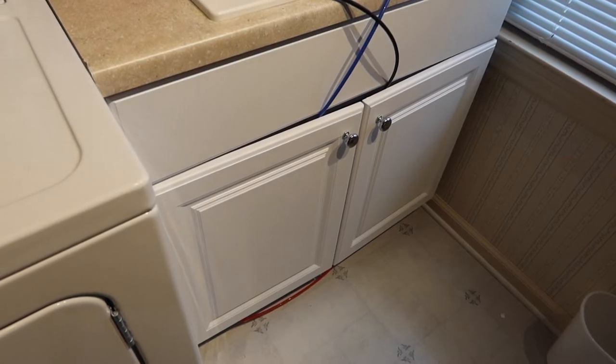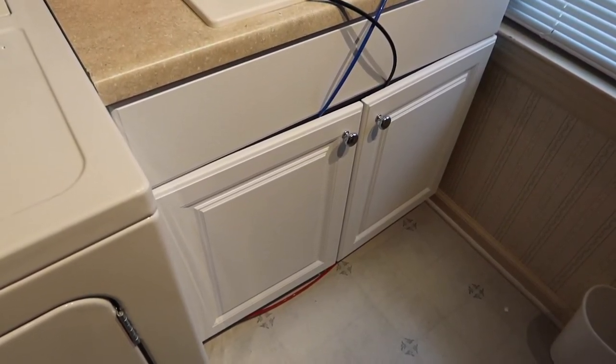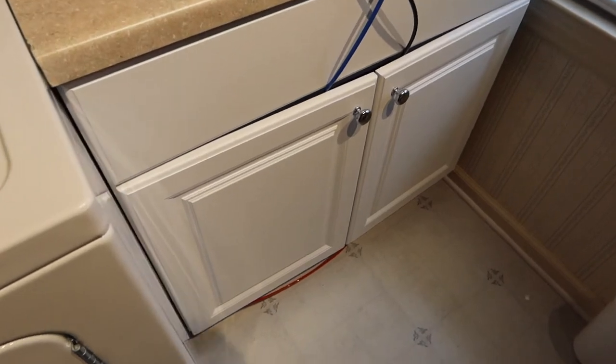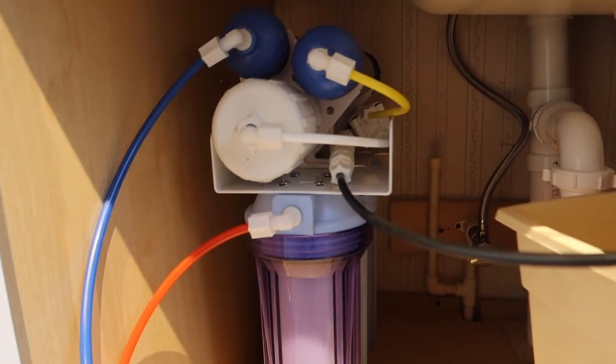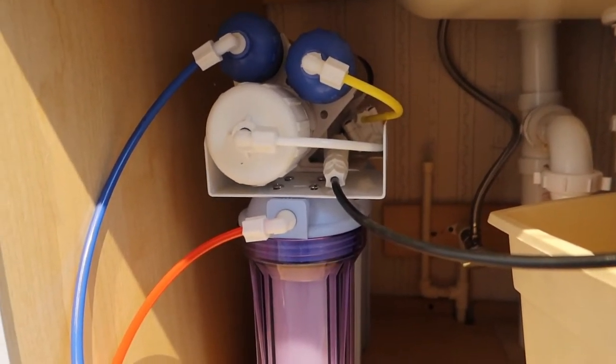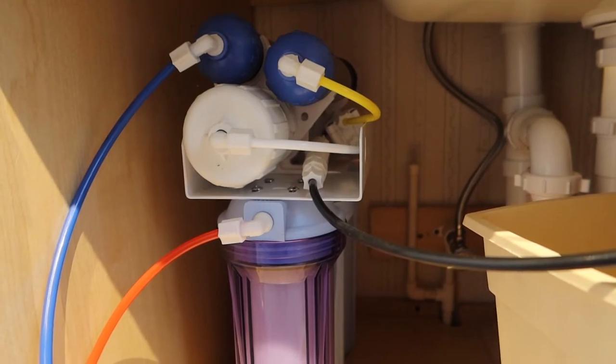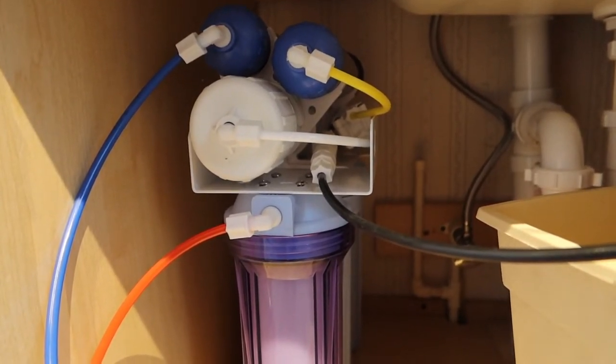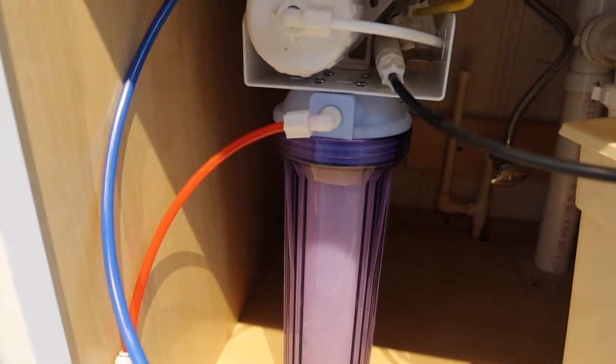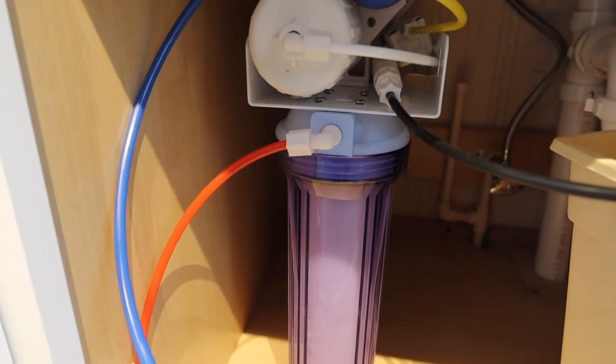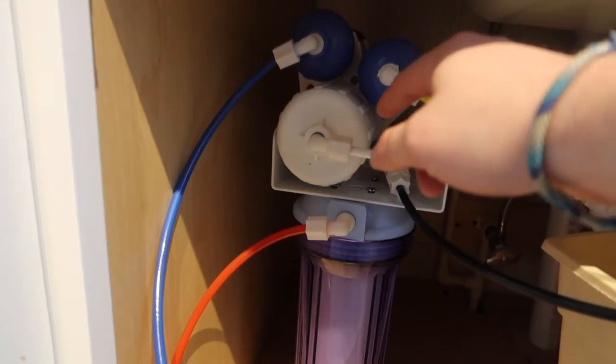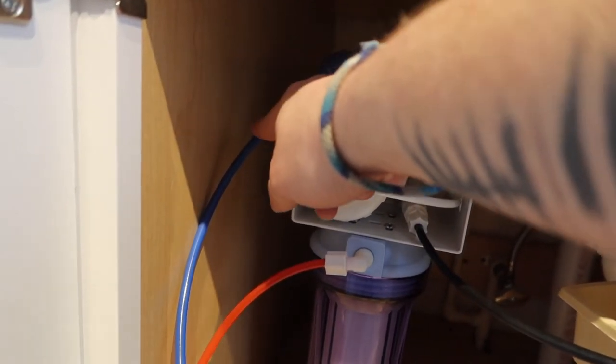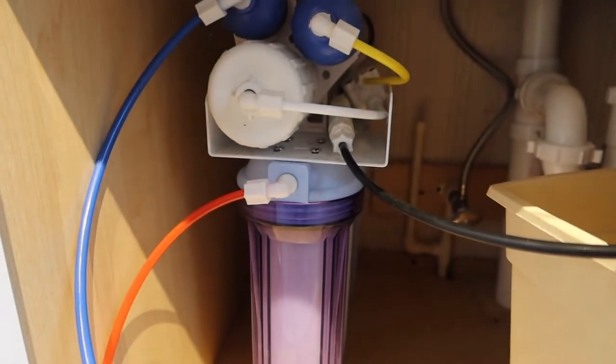The other thing I wanted to show you guys is the reverse osmosis water system. This filters out anything that could be harmful to the jellyfish and basically takes whether it's well water or city water, depending on how hard the water is. The water will filter from the faucet into this red tube, go through the filtration system, and then it filters out into this blue tube here. That's where I can capture the water in a jug or something similar to that.